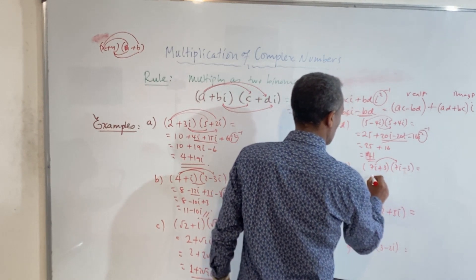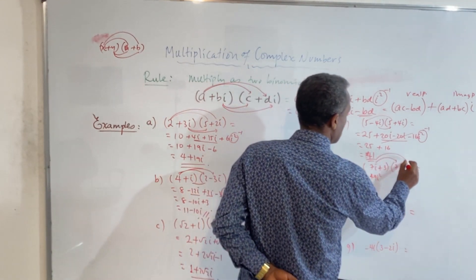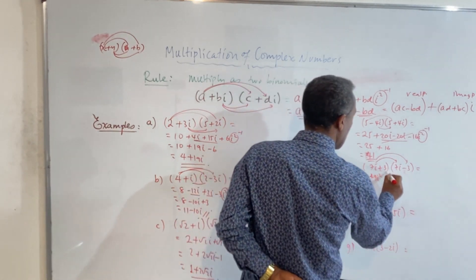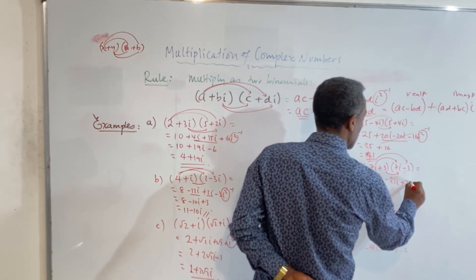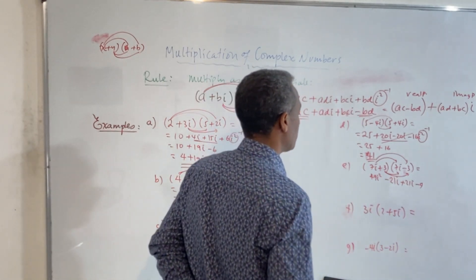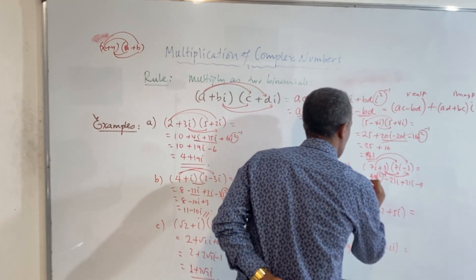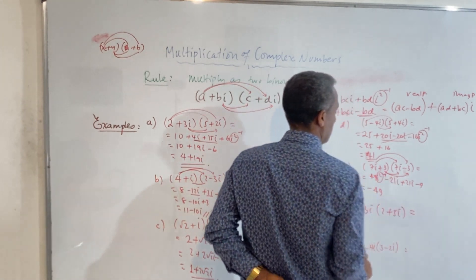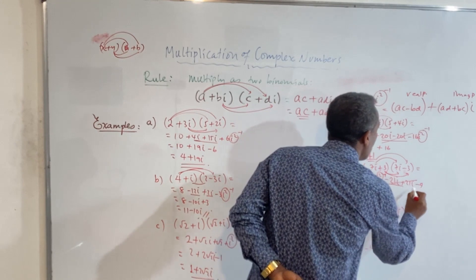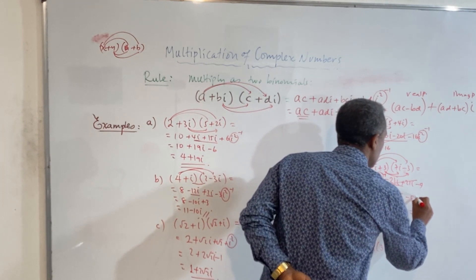7i times 7i is 49i squared. 7i times minus 3 is minus 21i. 3 times 7i is plus 21i. 3 times minus 3 is minus 9. The minus 21i and plus 21i cancel. 49i squared equals minus 49. So minus 49 minus 9 gives minus 58.